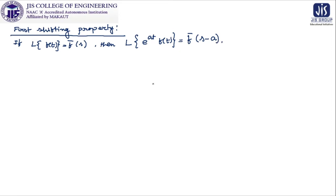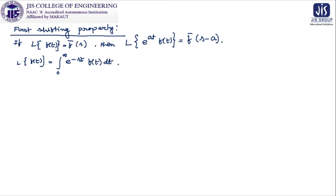Before going into the explanation of this property, we want to emphasize that in the transformed function, the parameter s is shifted to s minus a if we multiply the original function in terms of t by e^(at) and then take the Laplace transform. We know that Laplace transform of f(t) is defined as the integral from 0 to infinity of e^(−st) f(t) dt, and we denote it by f̄(s).